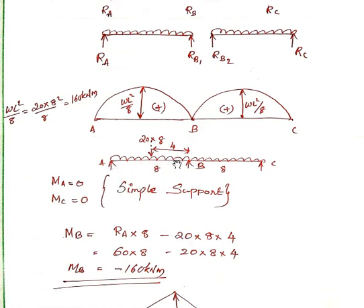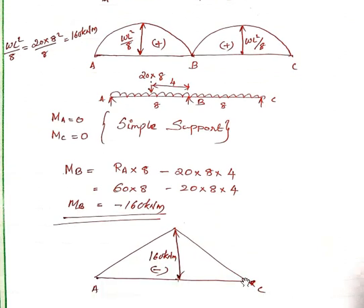Taking the left side: moment at B = RA × 8 minus 20 × 8 × (8/2) = 60 × 8 minus 20 × 8 × 4 = 480 minus 640 = minus 160 kN·m. The negative sign indicates a hogging moment. So the moment at B is −160 kN·m.